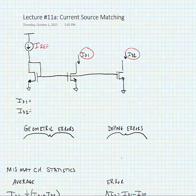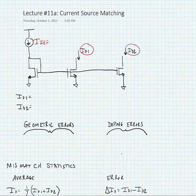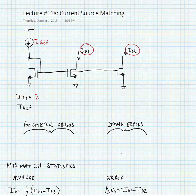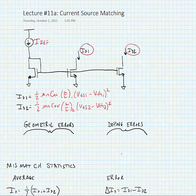Now ID1 and ID2 should have current values that are one-half mu n cox times W over L of the individual transistors times VGS minus VTH squared. ID2 is similar.